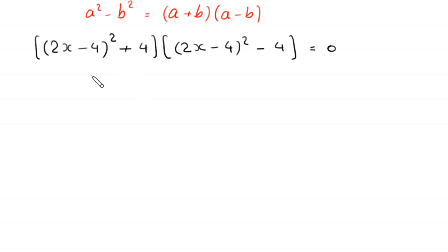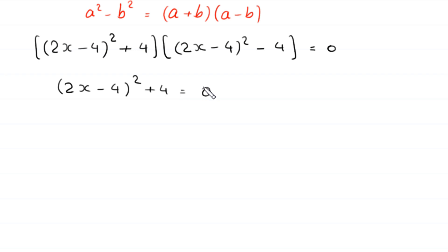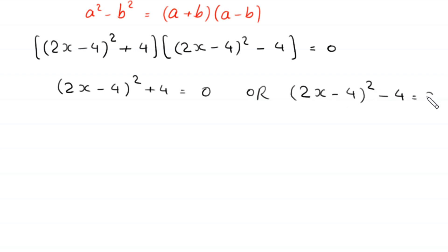From here, we have the expression (2x minus 4) squared plus 4 equals 0, and the expression (2x minus 4) squared minus 4 equals 0. So, we have two cases: Case 1 and Case 2.